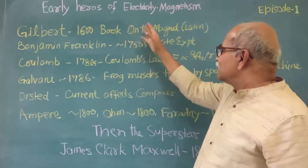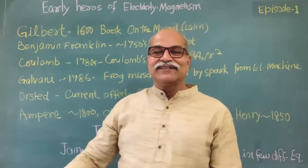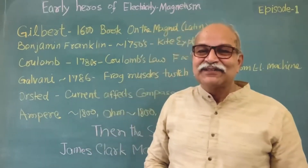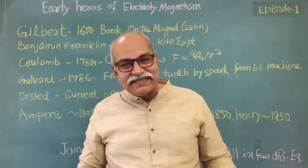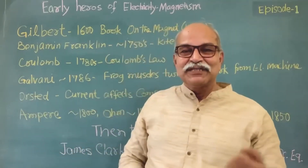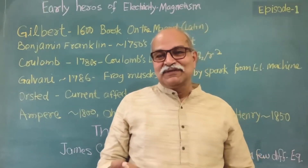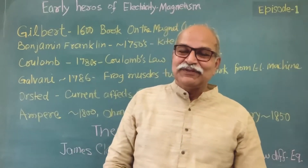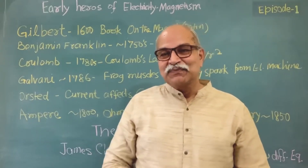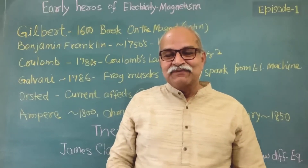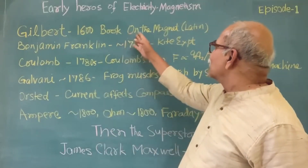People also knew about natural lodestones, which have the property of attracting iron things. But Gilbert made a lot of studies and wrote all his findings in his book 'On the Magnet,' documenting electricity and magnetism in a systematic way.